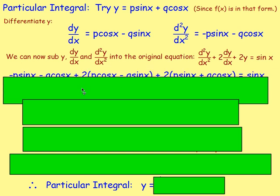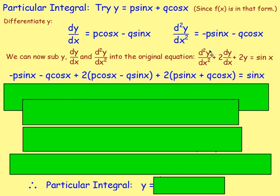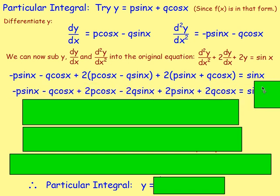Substituting into the original equation: (−p sin x − q cos x) + 2(p cos x − q sin x) + 2(p sin x + q cos x) = sin x. Expanding the brackets and collecting terms, we need to find p and q by equating coefficients.